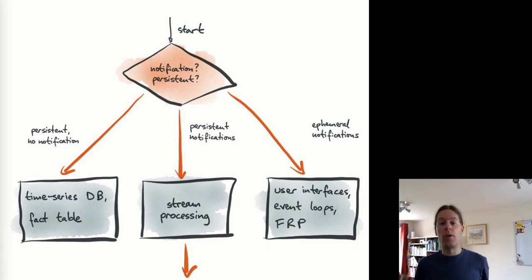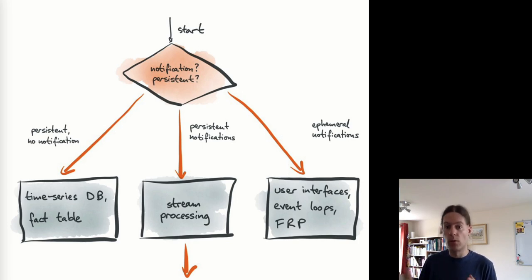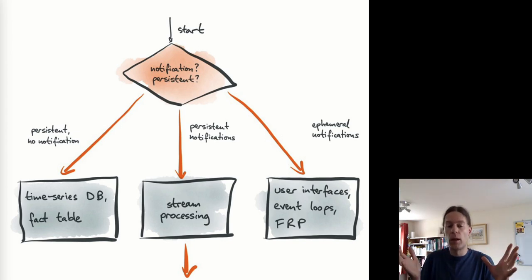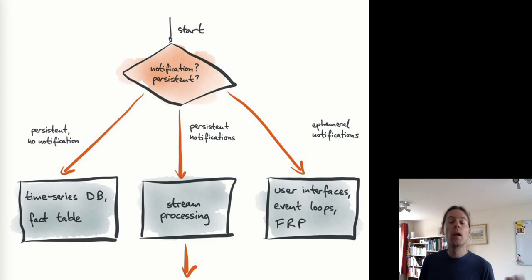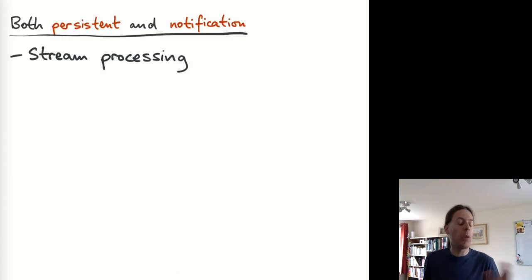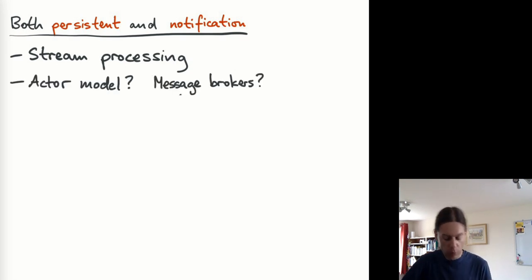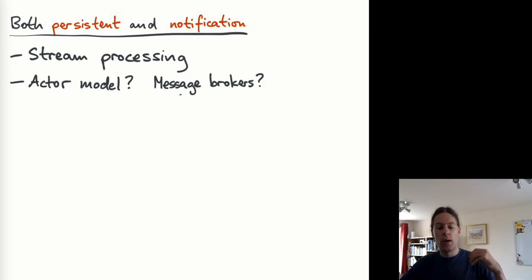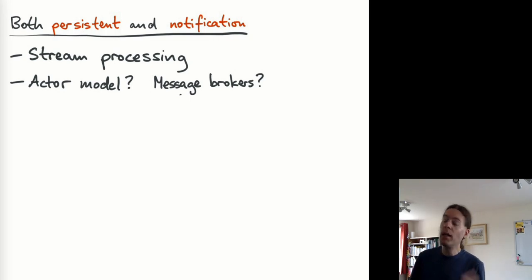We could combine these properties — taking the persistent aspect of databases and the notification aspect of event loops and callbacks — and fuse them together into what I'll call stream processing, for lack of a better term. In the rest of the talk I'll concentrate on this aspect of events that are both persistent and notifications. Some message brokers used for communication between services in an organization work this way: one service enqueues a message delivered to another, and the broker may or may not write the message to disk as part of handling it.